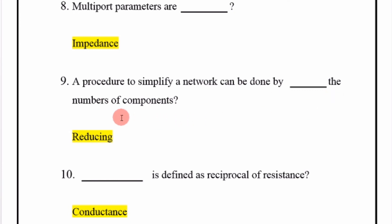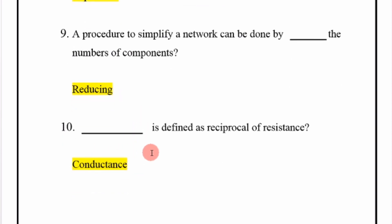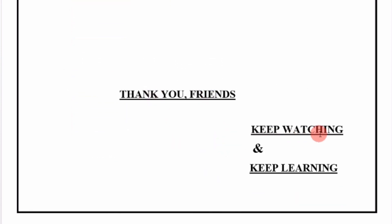A procedure to simplify a network can be done by reducing the number of components. Conductance is defined as the reciprocal of resistance. Thank you friends, keep watching and keep learning. Allah Hafiz.